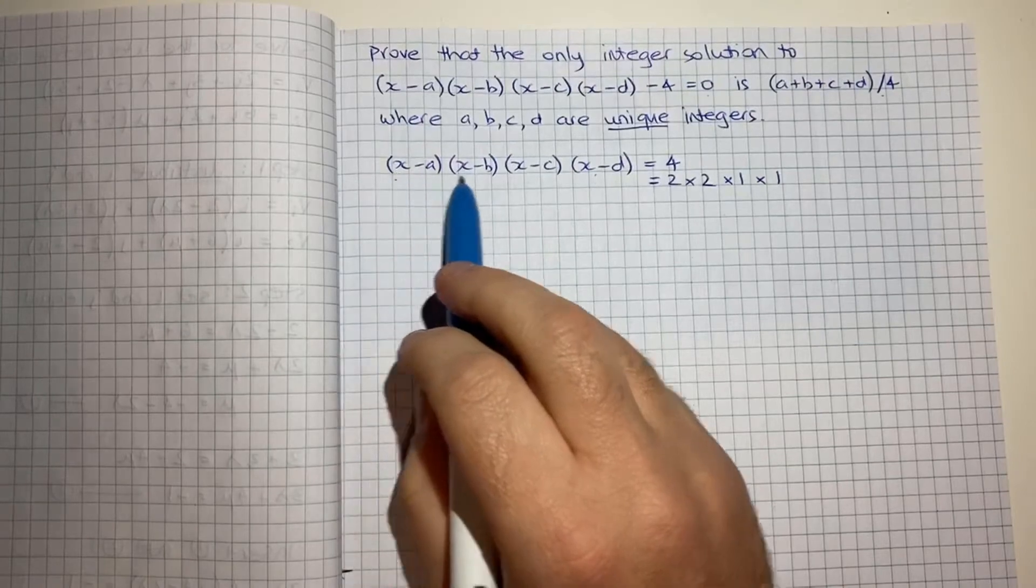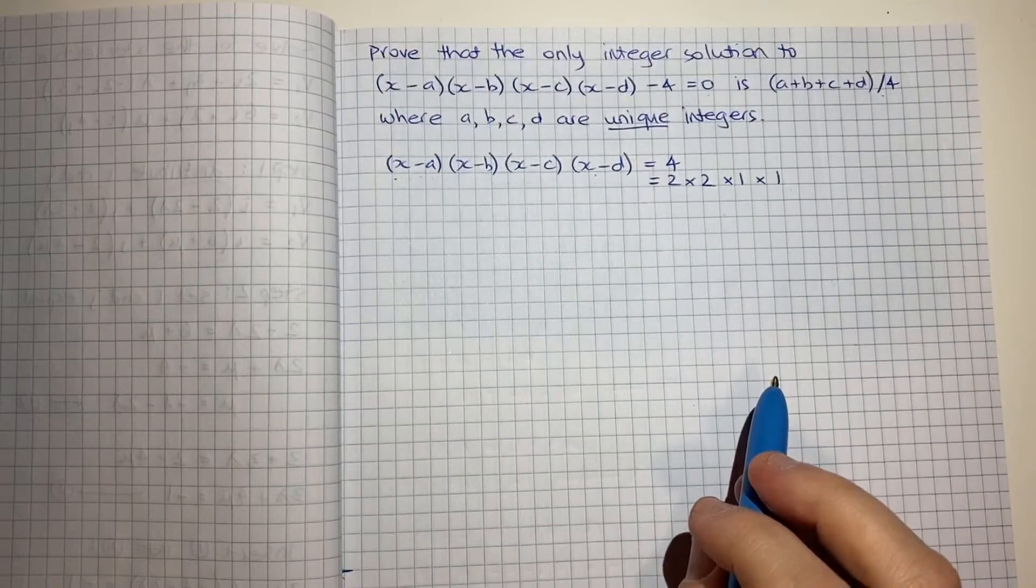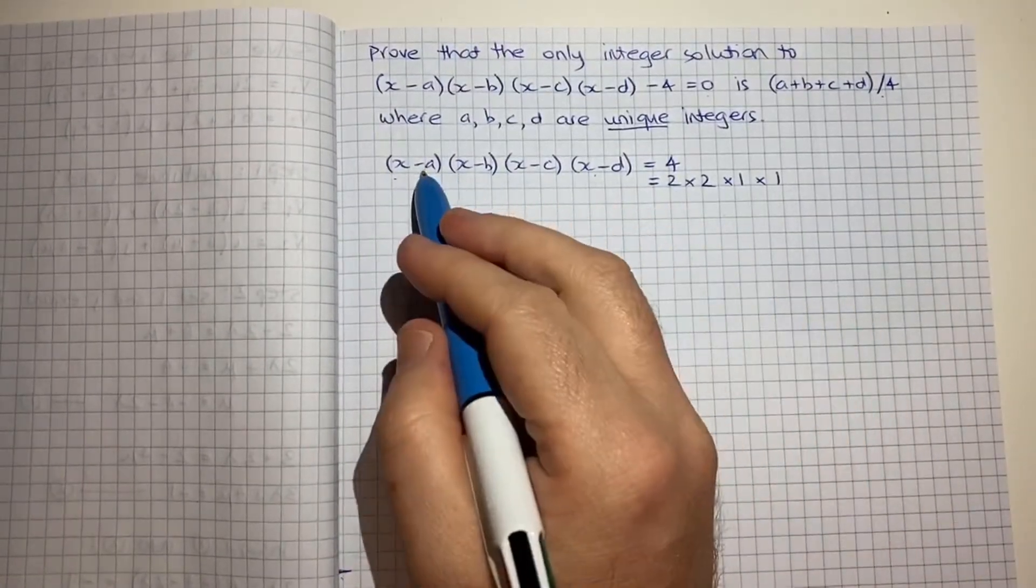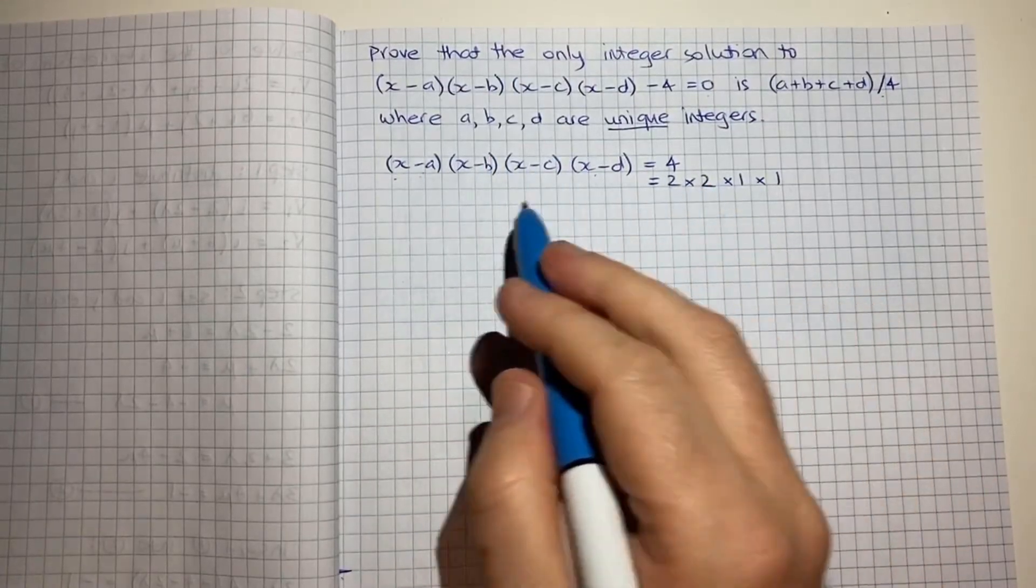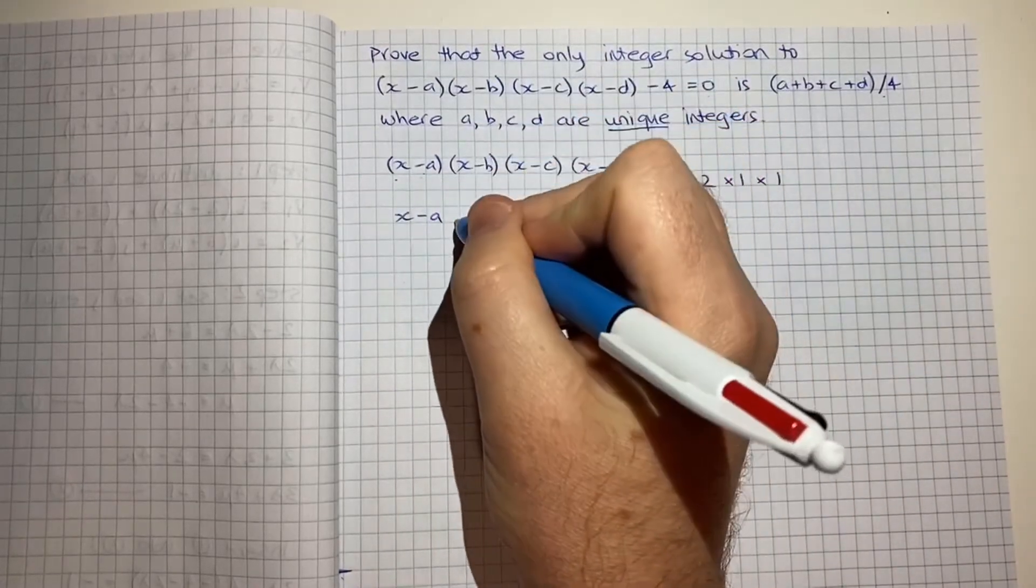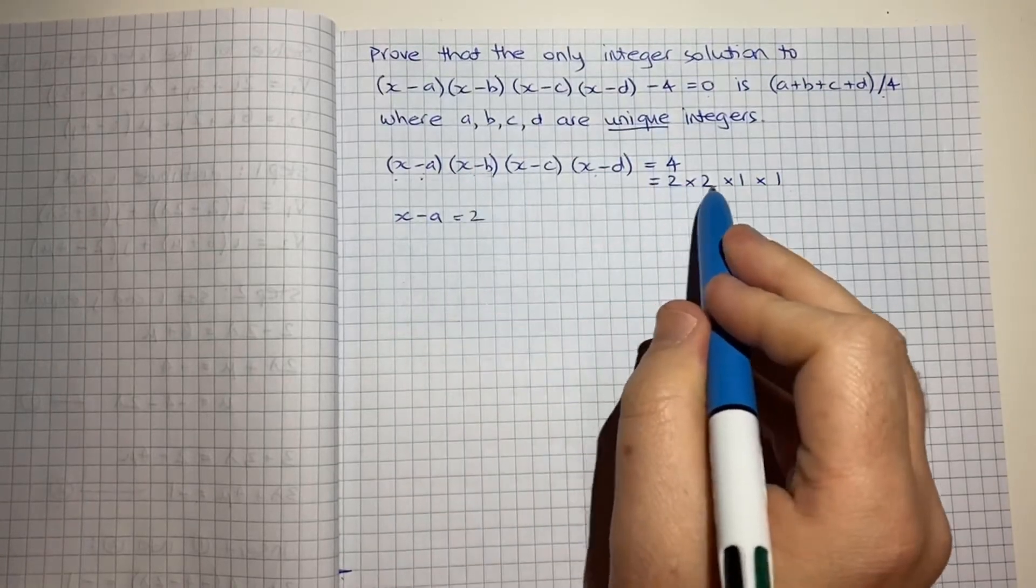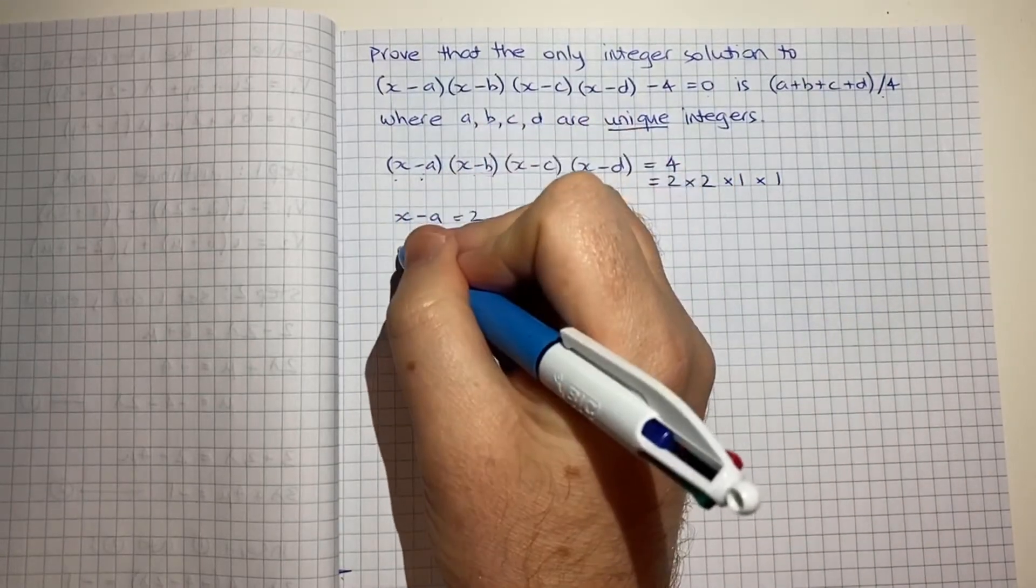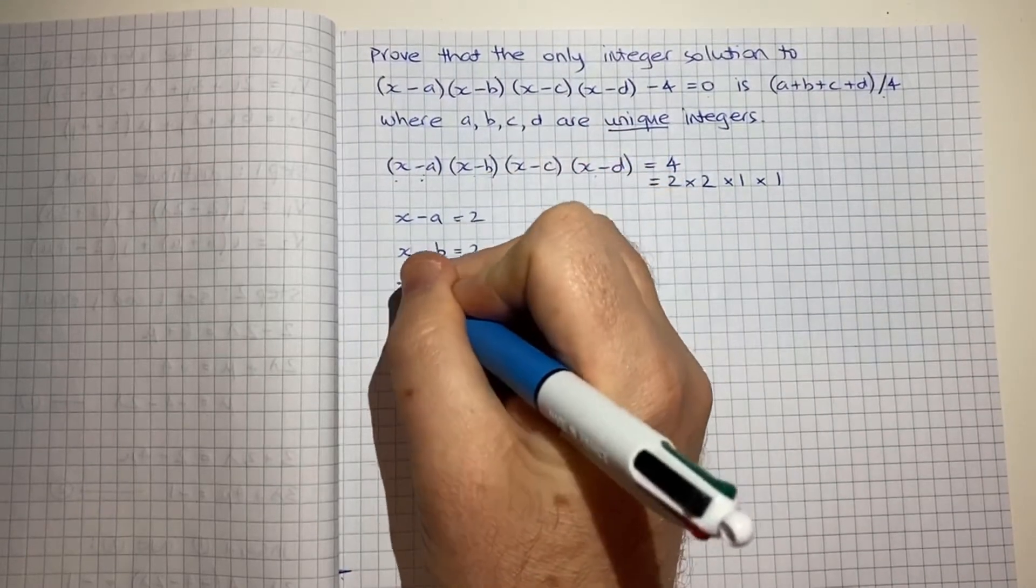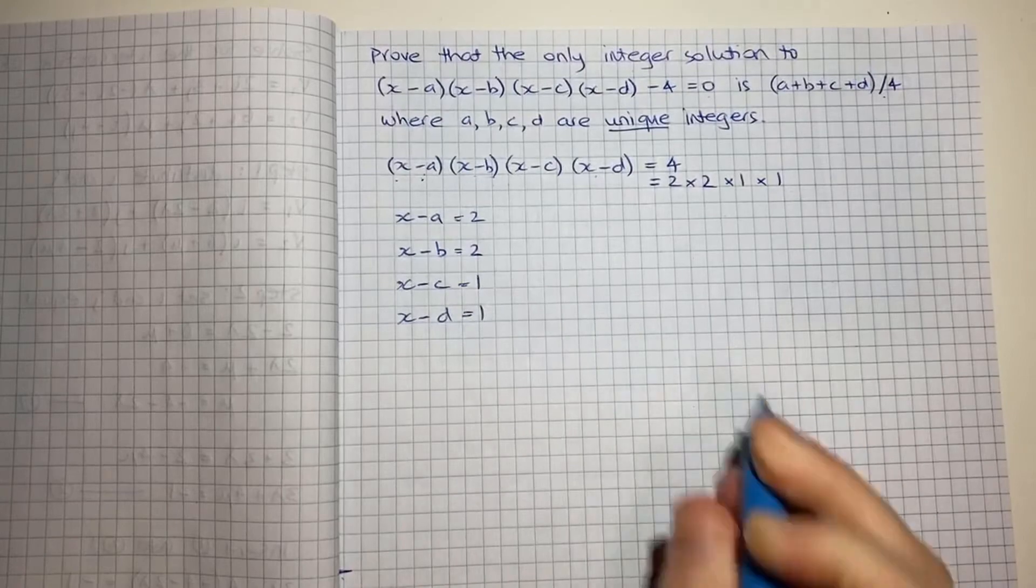So if it is the case that these four things multiplied together equals these four things multiplied together then we can start to match up these items. So I could say x-a matches to 2, x-b the second item here matches to the second item here, x-c matches to 1 and x-d also matches to 1.